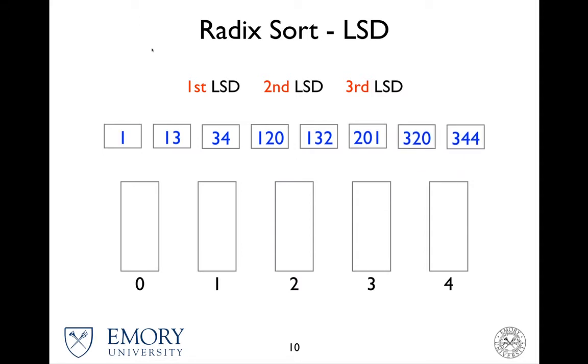So once you have gone through the first, second, and third least significant digit, then you have a list with everything sorted in ascending order.